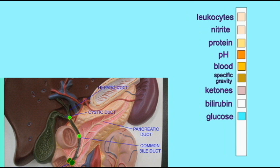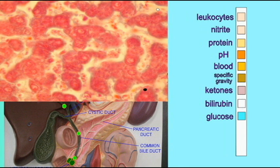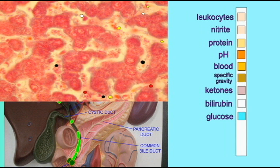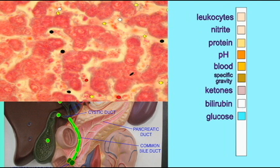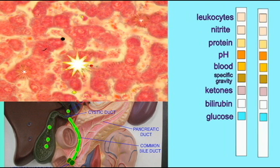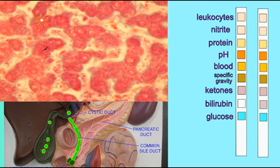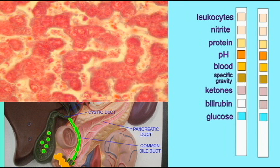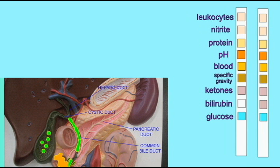However, if liver cells are damaged, then bilirubin can enter the blood and thus be filtered at the kidneys. So a positive test for bilirubin in urine is typically an indication of some type of liver disease.